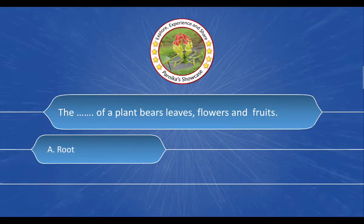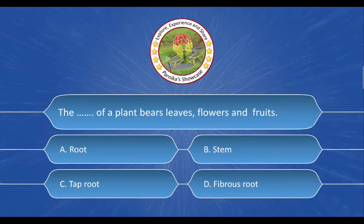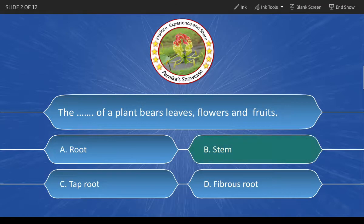Question 1: The dash of a plant bears leaves, flowers and fruits. The options are A. Root, B. Stem, C. Taproot, D. Fibrous Root. And the correct answer is Option B. Stem.